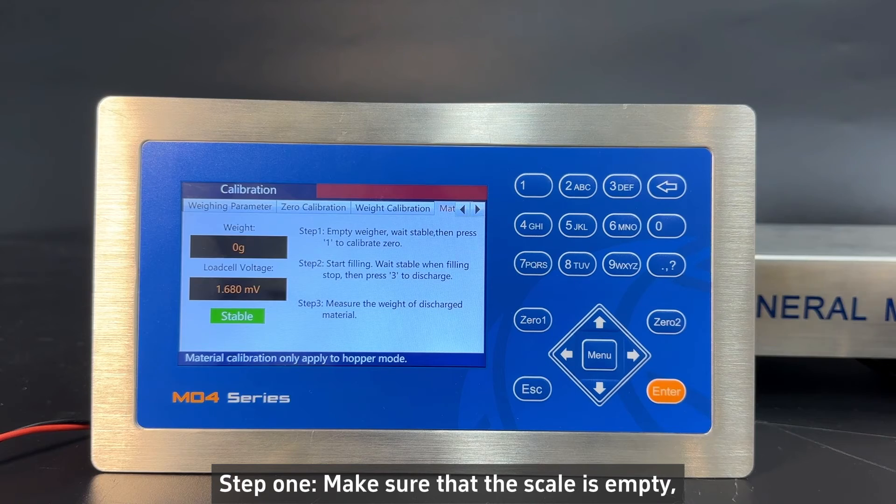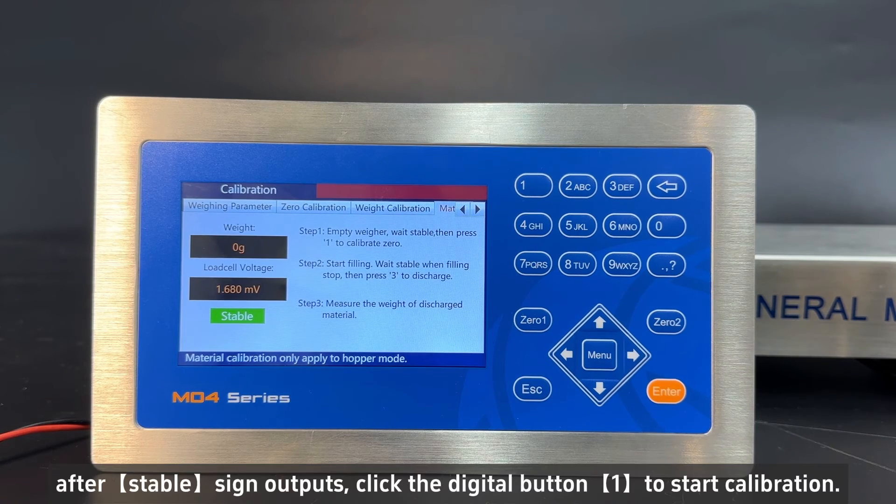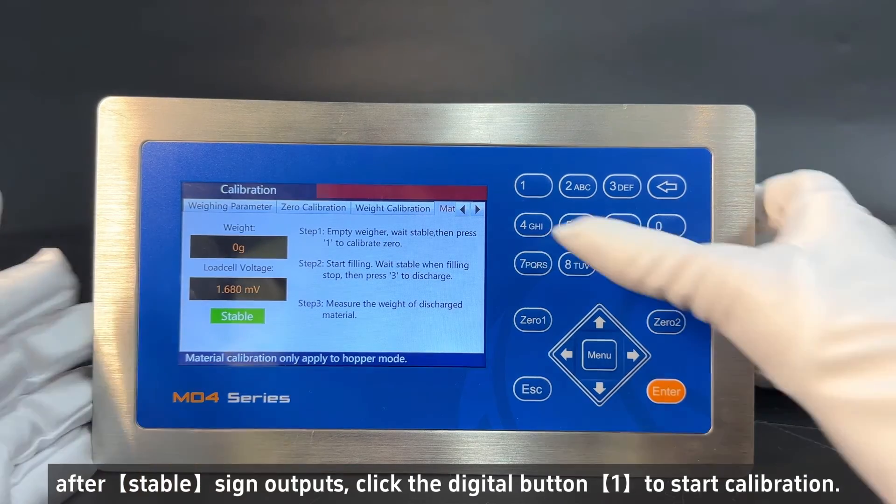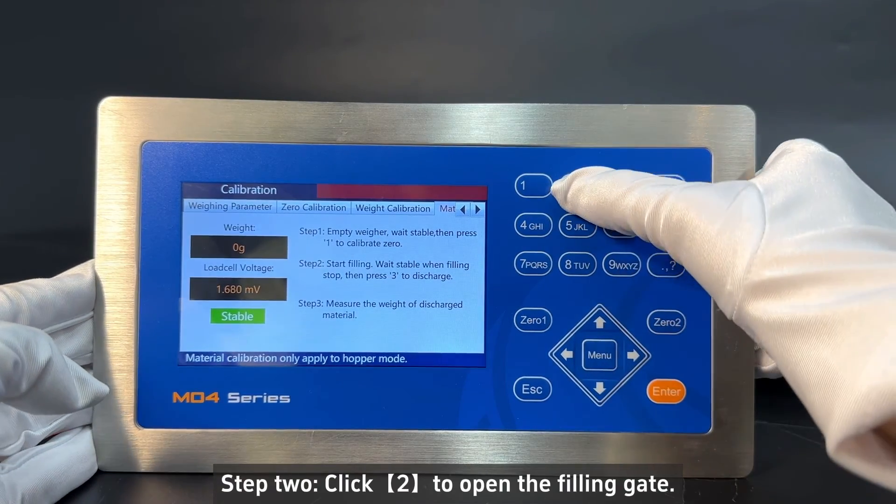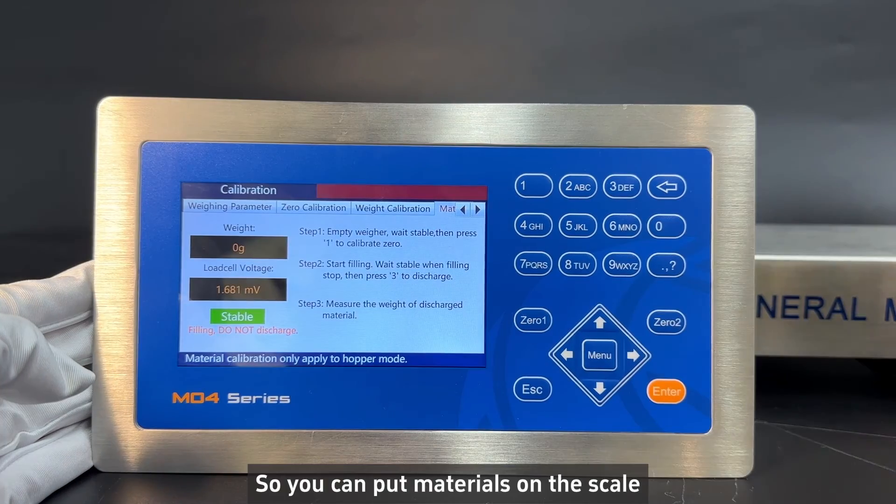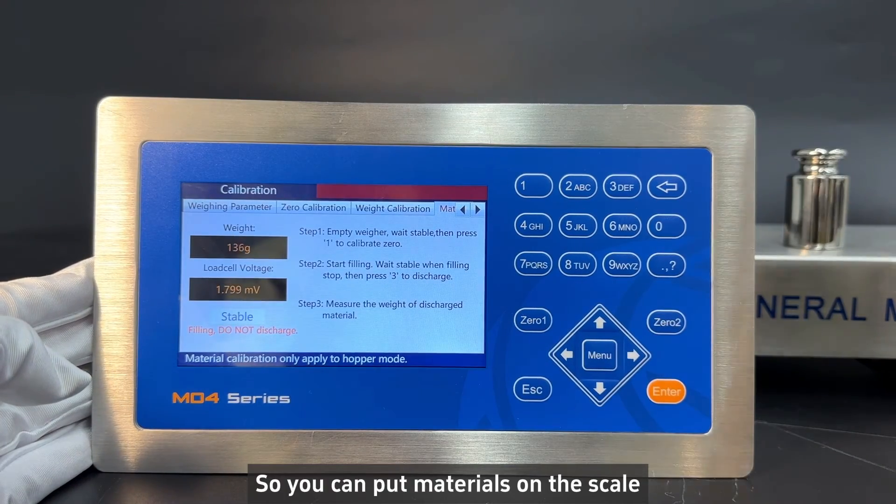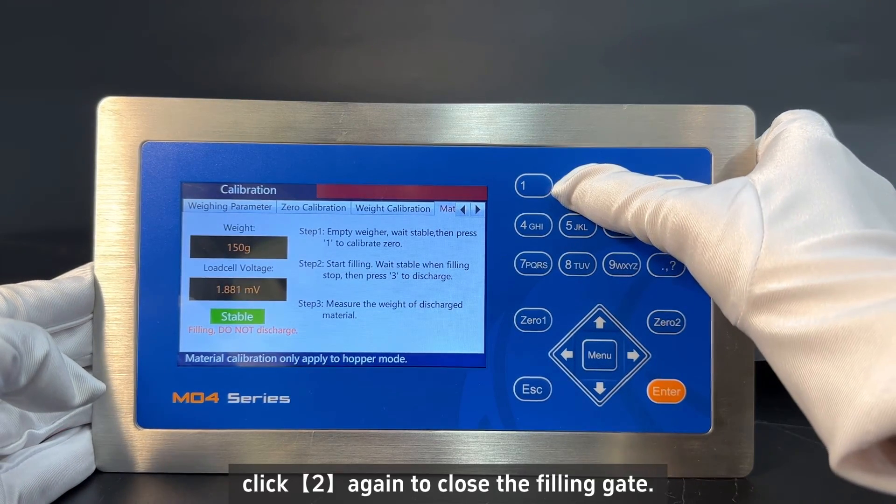Step 1: Make sure that the scale is empty. After stable sign outputs, click the digital button 1 to start calibration. Step 2: Click 2 to open the filling gate. So you can put materials on the scale. Click 2 again to close the filling gate.